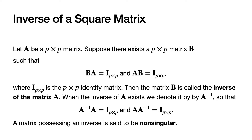You'll recall that an identity matrix has 1s down the main diagonal and 0s everywhere else. So, if such a P by P matrix B exists, then the matrix B is called the inverse of the matrix A. When the inverse of A exists, we denote it using the notation A with a negative one in the superscript to indicate inverse. Using that notation, A inverse times A and A times A inverse both equal the P by P identity matrix.